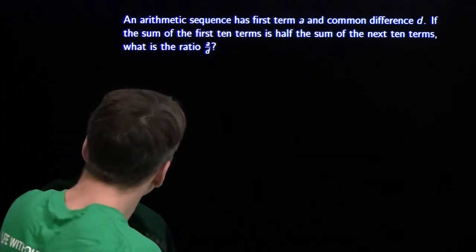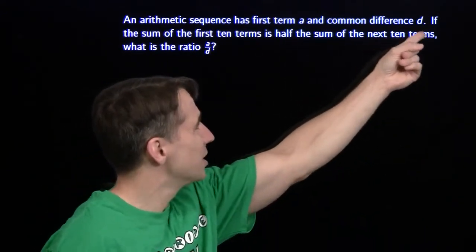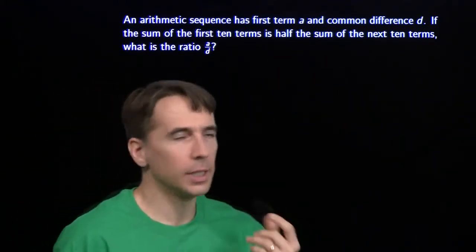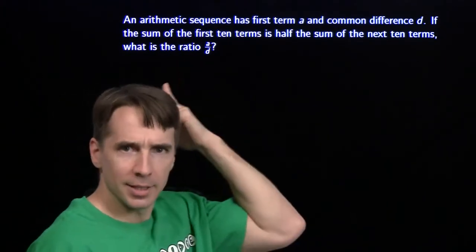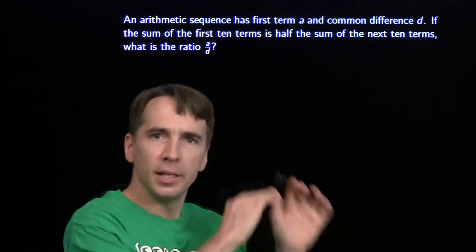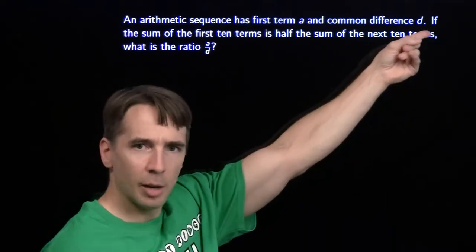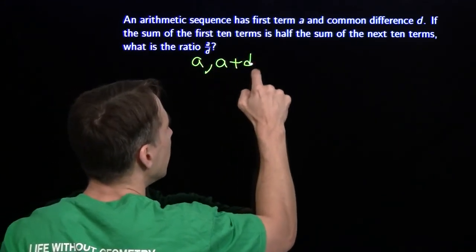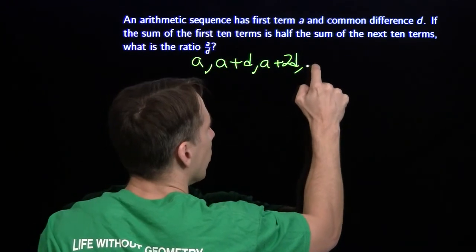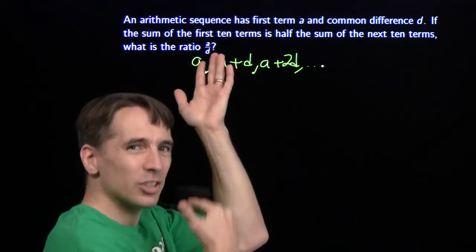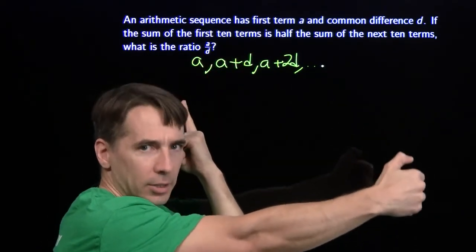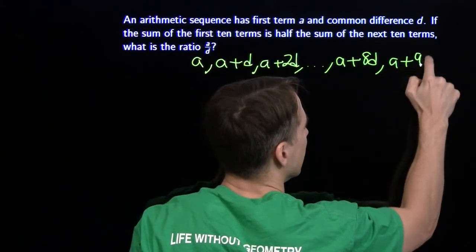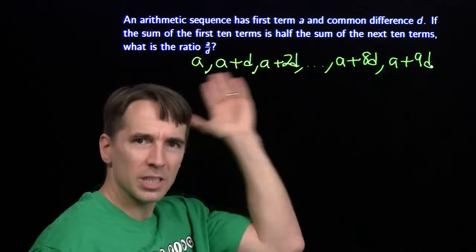Let's take a look at another problem. We have an arithmetic sequence with first term A and common difference D, and we're told the sum of the first ten terms is half the sum of the next ten terms. What's the ratio A over D? We'll write out the first ten terms: A, A plus D, A plus 2D, on and on, up to A plus 8D and A plus 9D as the last two terms.